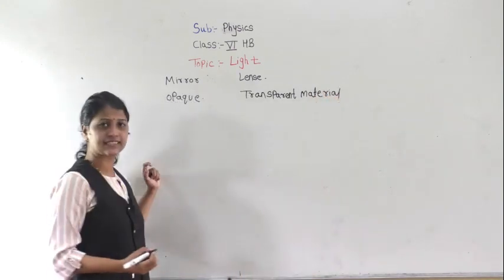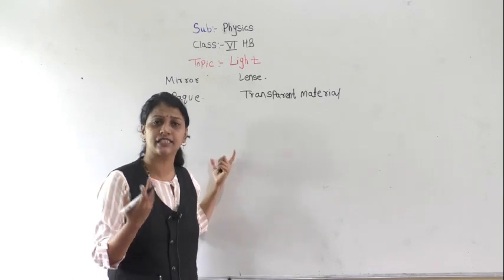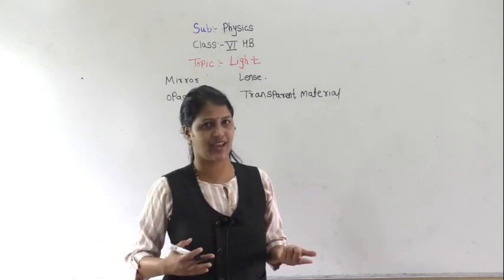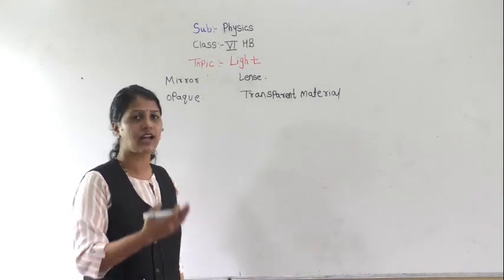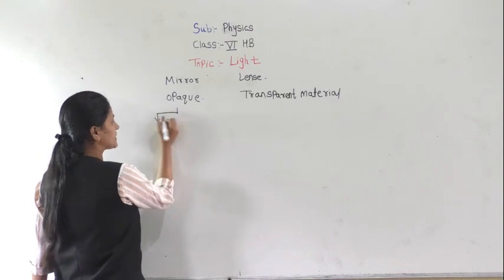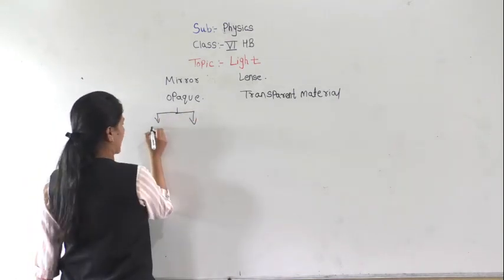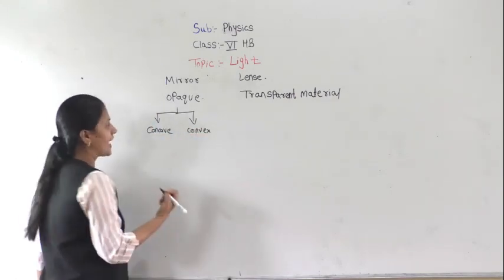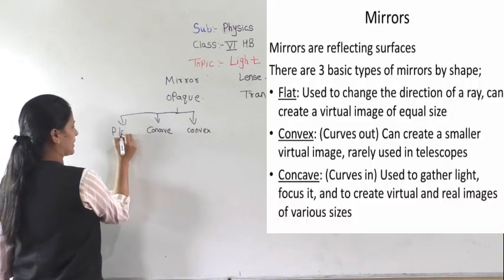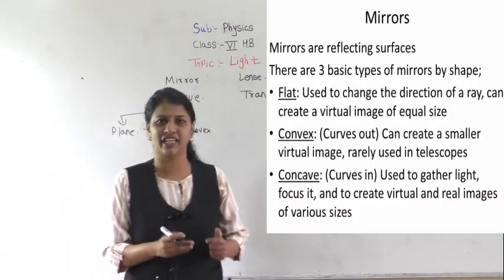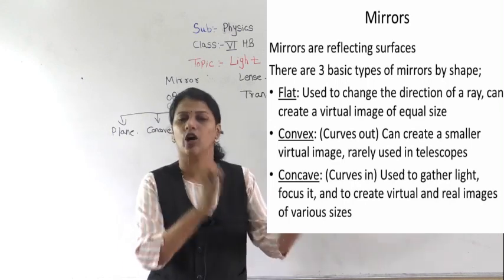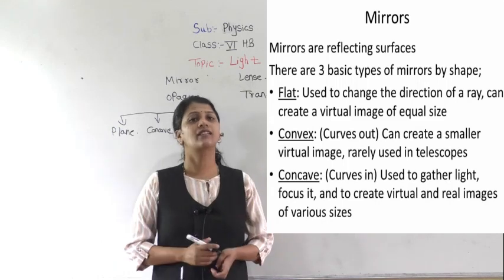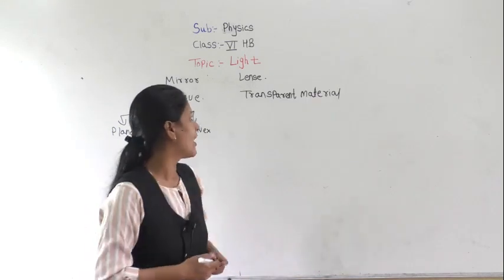We have discussed three types of mirrors: the plane mirror and its characteristics, and the spherical mirror and its characteristics. Spherical mirrors are classified into two types — concave and convex. We have discussed the plane mirror, its characteristics, the concave mirror, its characteristics, how images form, the convex mirror, its characteristics, and where we use them.